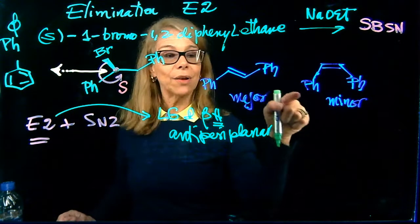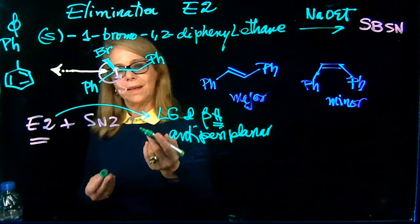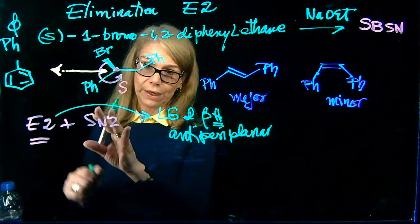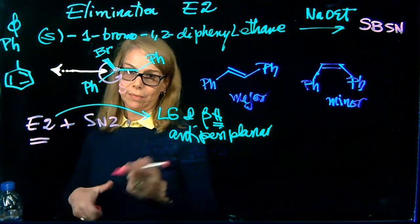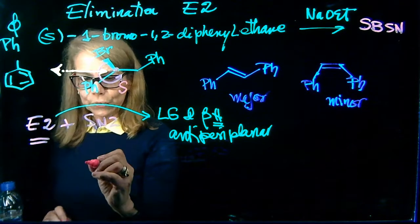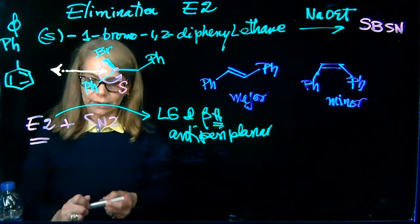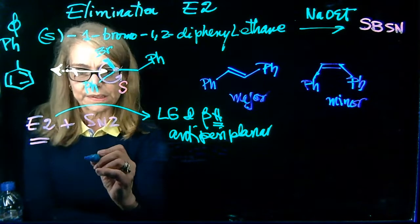we found that the staggered conformation that leads to the formation of this product has the two phenyl groups opposite. So now, let's do the other product. I'm going to start redrawing the Newman projection of the structure that I have above. That's my point of view.